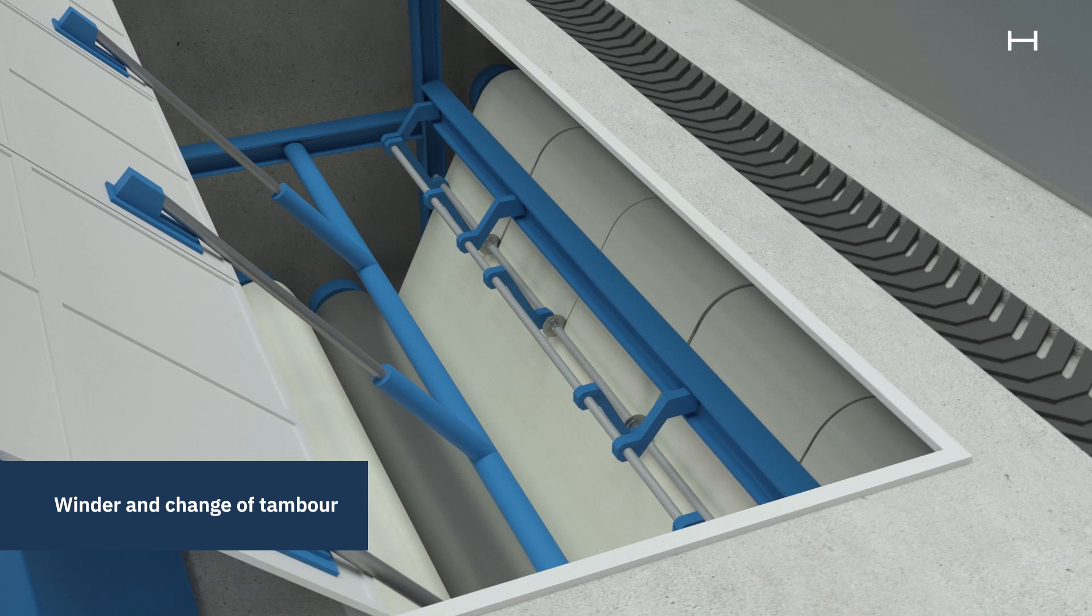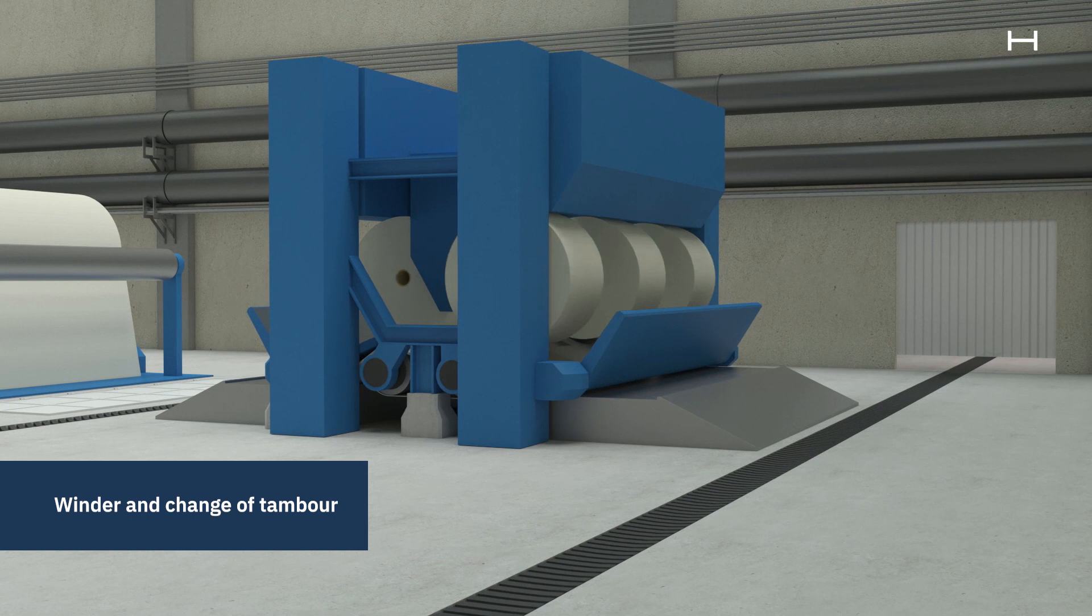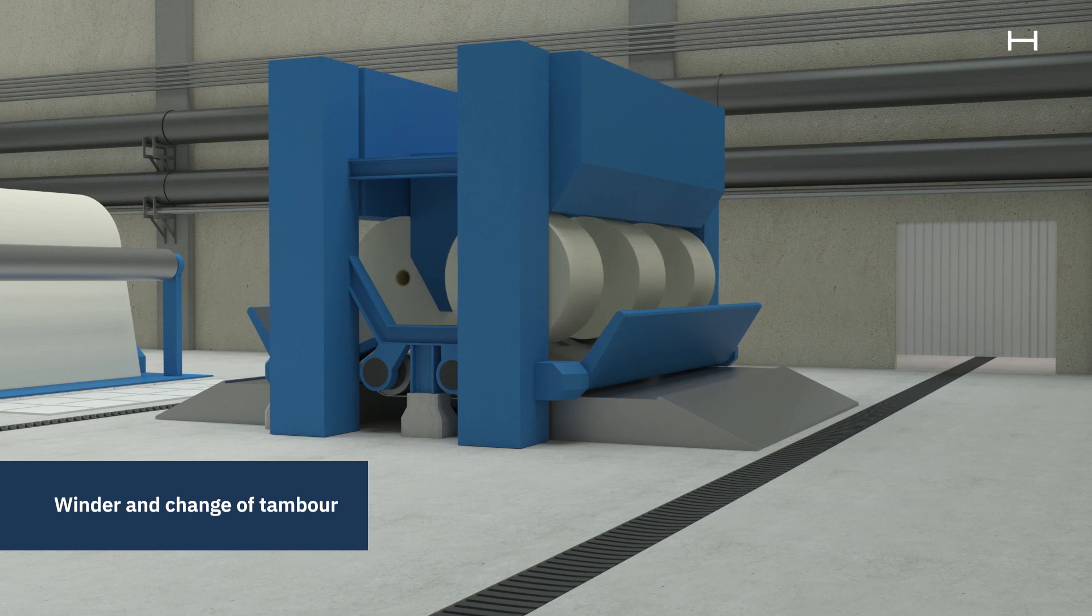The last step is the winder, where the jumbo reel is cut into smaller reels. The reels are cut into customer specifications in respect of diameter, width per reel and the number of reels or tonnes. After wrapping, the reels are ready to be sent to customers around the world.